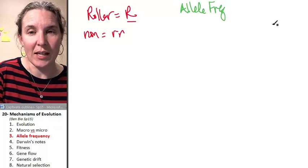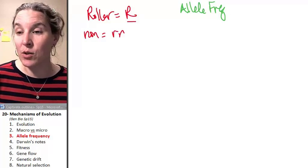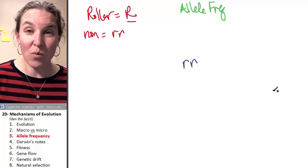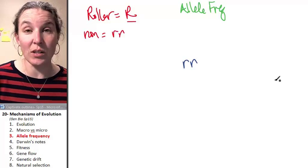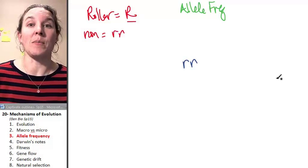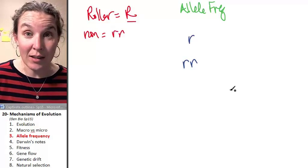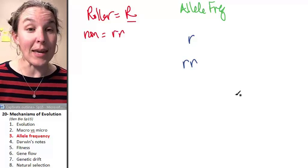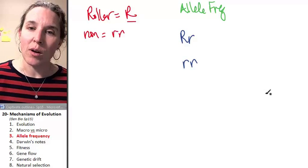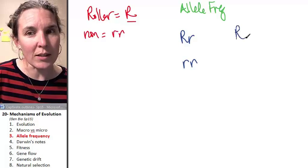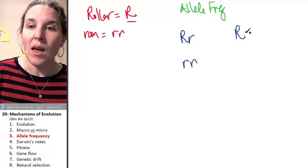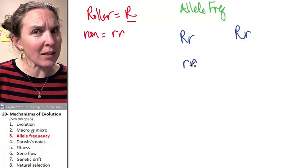Let's calculate allele frequency in my house. I have one small human who cannot roll his tongue — this is my child. So he has two little r's. Right away I know that I have to have at least one little r allele. And since I can roll my tongue, I also have to have one dominant allele. This small child's father can also roll his tongue, so he has to have at least one dominant rolling allele, and he had to have a recessive allele to donate to my little non-roller.